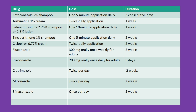Oral therapy options include: Fluconazole 300 mg orally once weekly for 2 weeks; and Itraconazole 200 mg orally once daily for 5 days. Additional topical agents include Clotrimazole applied twice per day for 2 weeks, Miconazole used twice per day for 2 weeks, and Fenticonazole applied once per day for 2 weeks.